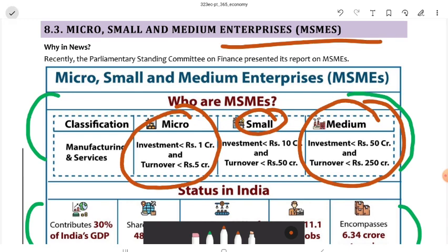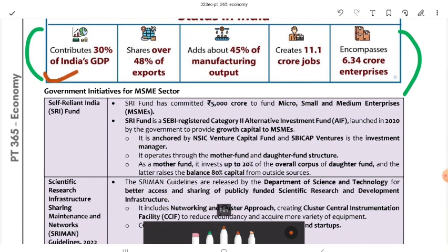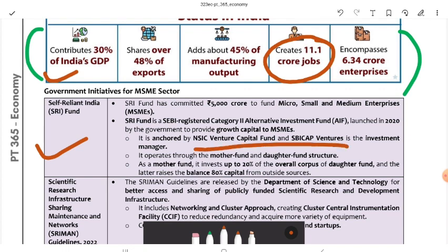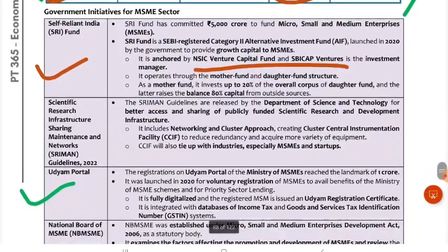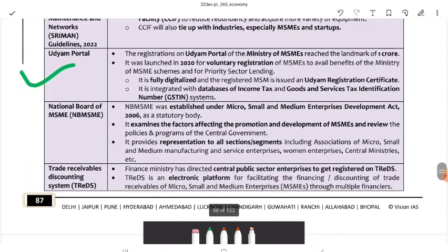MSMEs are very important for India. They contribute 30% to India's GDP, account for 48% of exports, 45% of manufacturing output, and provide about 11.1 crore jobs through 6.34 crore enterprises. Under the Atmanirbhar Bharat (Self-reliant India) initiative, funds like NCATBI, NSIC, and Venture Capital Fund are provided. There is also the Udyam registration portal launched in 2020 for voluntary digitized registration of MSMEs so they can access benefits and registration certification.